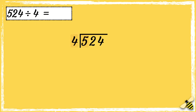So first, we need to see how many times 4 goes into 5. 4 times 1 is 4, so 4 goes into 5 once. We now need to find out what's left over, so 5 take away 4 equals 1.